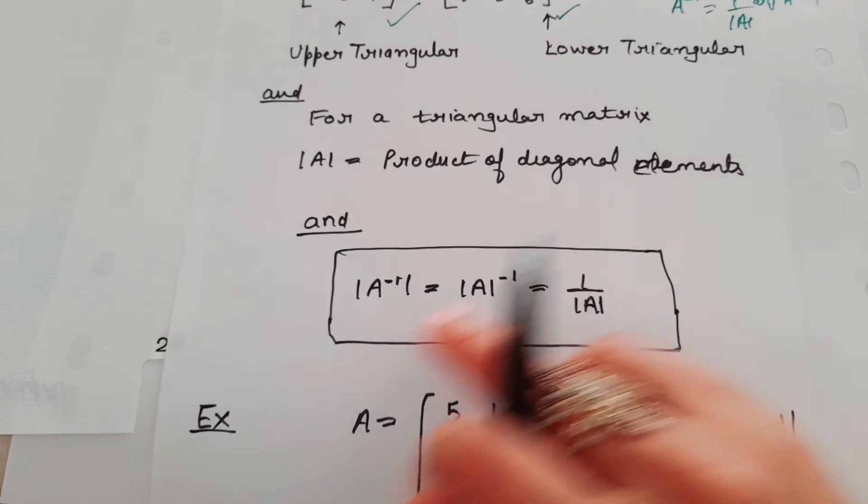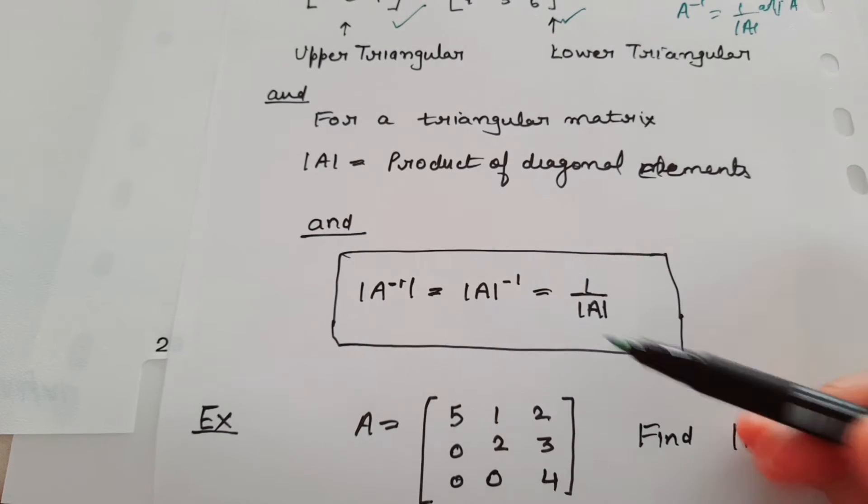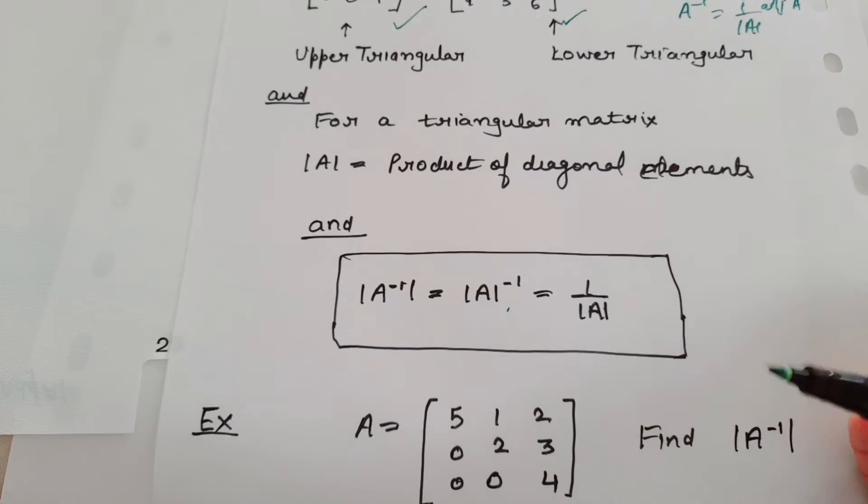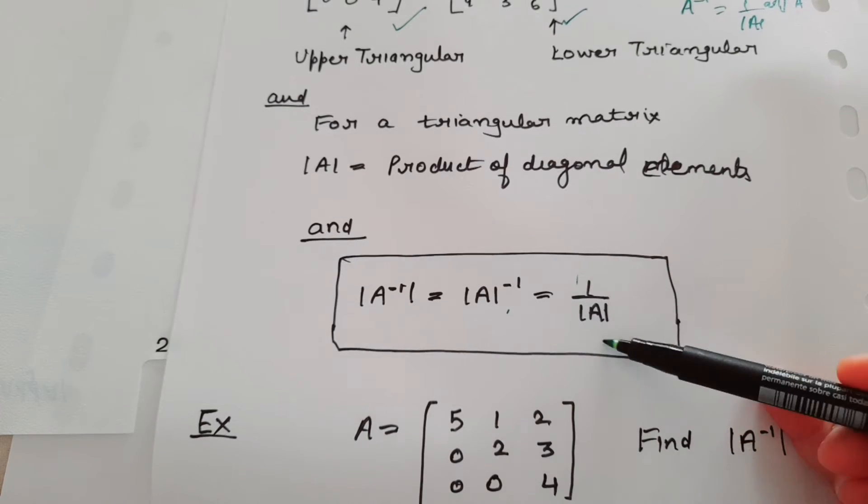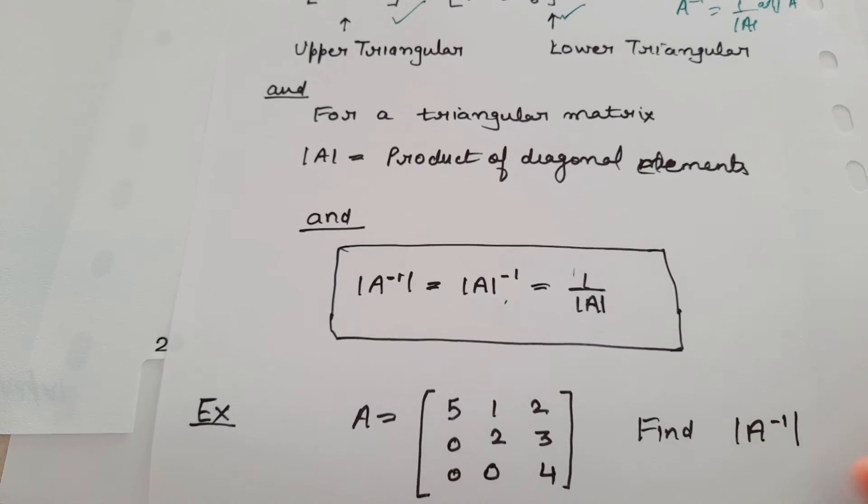So if we need to find determinant of A inverse, it will be determinant of A inverse, that is 1 upon determinant of A. For example,